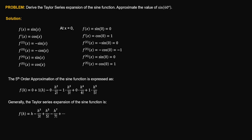So for any value or any angle — any value of h — we can approximate the value of the sine function using this expression. Take note that h must be in radians, because degrees are not valid for approximating the sine function this way. So for h equal to 60 degrees, that is equal to pi over 3 radians, we can now use the Taylor series expansion.